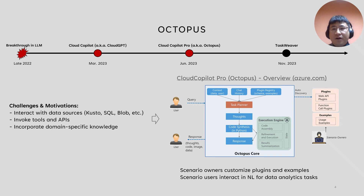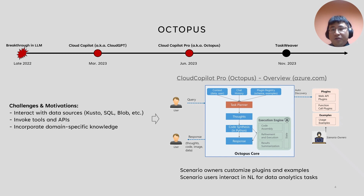Later, we realized that a RAG system is not enough for many of our collaborators' scenarios. In AIOps, we usually need to interact with various data sources such as Kusto, SQL, Geneva, or Blob storage. Once we have the data, we also need to keep it in memory and keep editing it to answer users' arbitrary questions. We sometimes need to call tools or APIs. Different teams usually have their own troubleshooting knowledge, so we need to incorporate their knowledge into the system.